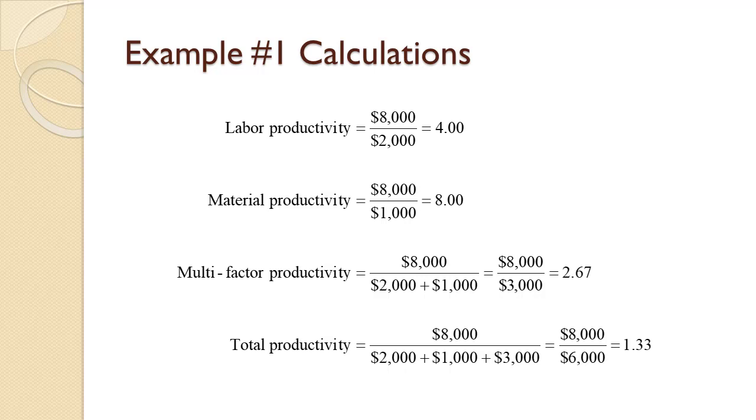For this multi-factor productivity, we need to combine labor and material, so we have $8,000 divided by the sum of $2,000 and $1,000, or $8,000 divided by $3,000, which equals 2.67.